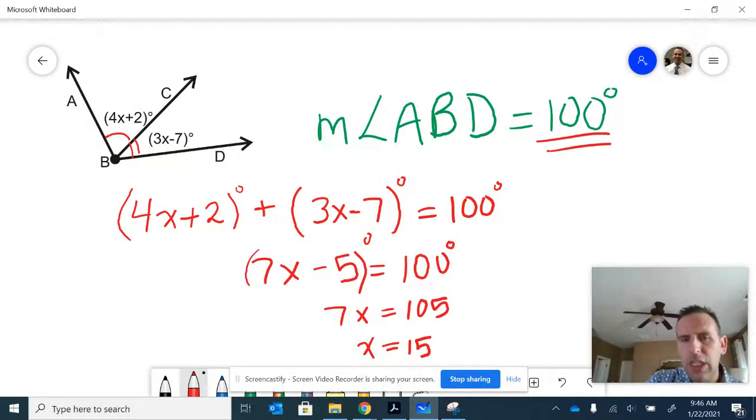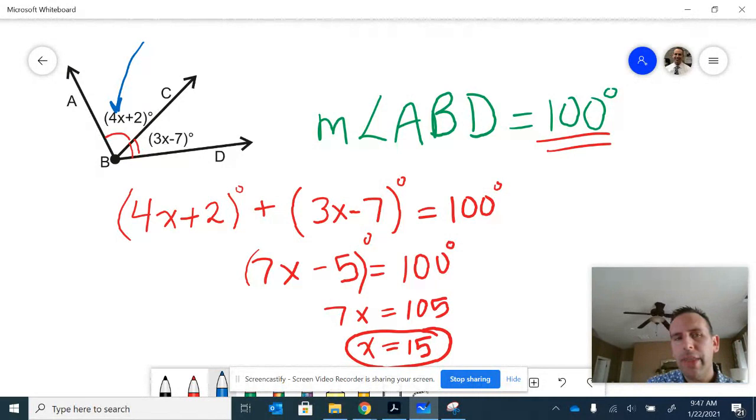Not only can you find the value of x, you can go back and find the value of each of the individual angles by plugging in. So if you were to plug in the value for x into this first expression, 4 times x plus 2, that would end up being 4 times 15 plus 2, which would be equivalent to 62.